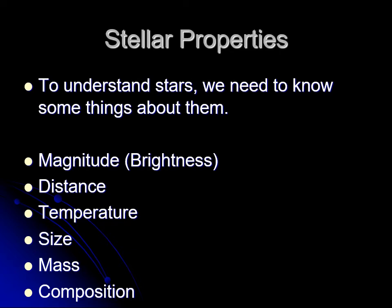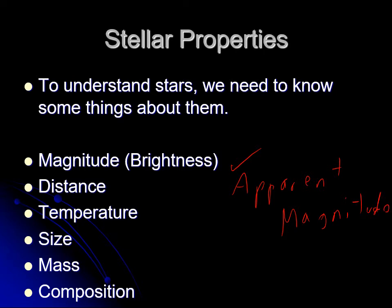In our quest to understand stars, we started off talking about the magnitudes of stars — that's a measure of how bright they appear. What we've been talking about here is apparent magnitude. The apparent magnitude is how bright stars look to you; it's not necessarily a measure of how bright they actually are. We'll be getting to that.